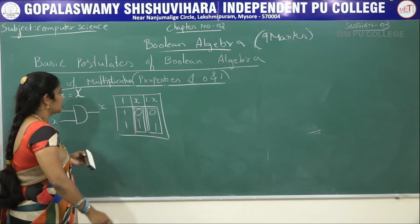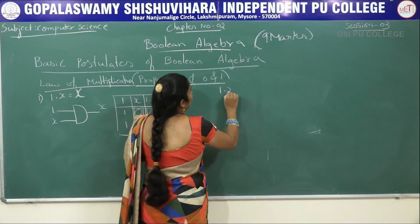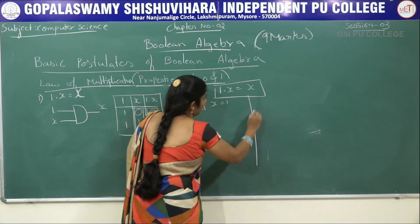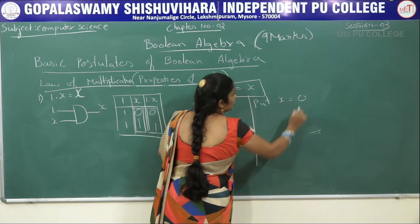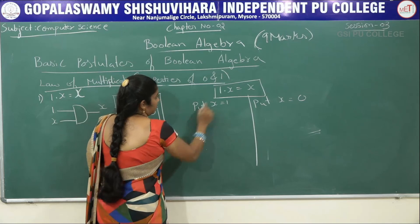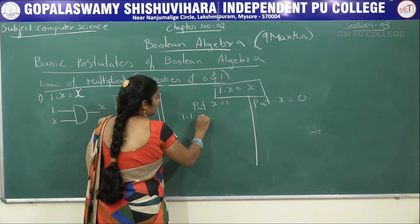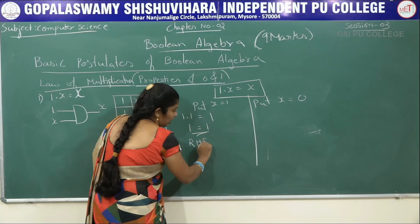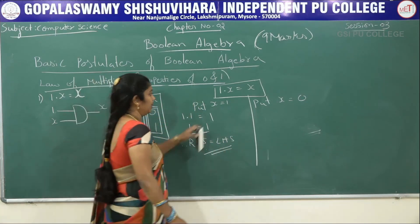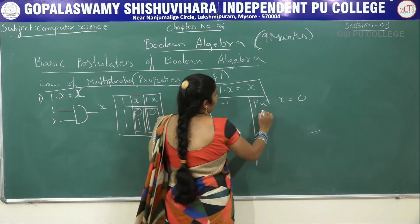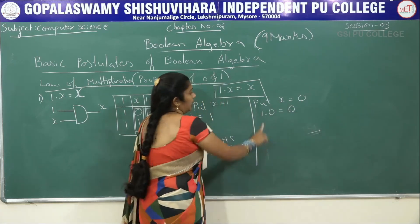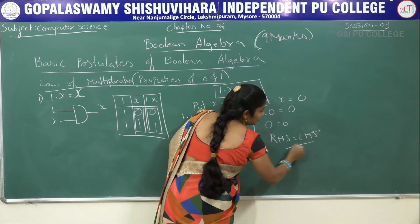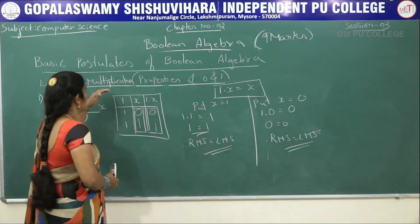Solve 1 · x = x by perfect induction method. Put x = 1: then 1 · 1 = 1, which equals 1 — right-hand side equals left-hand side. Put x = 0: then 1 · 0 = 0, which equals 0 — right-hand side equals left-hand side. This completes the proof of 1 · x = x.